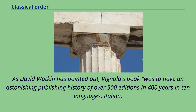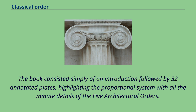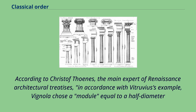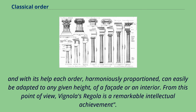A first publication of plates appeared in Rome in 1562, with the title Regola delli Cinque Ordini d'Architettura. As David Watkin has pointed out, Vignola's book had an astonishing publishing history of over 500 editions in 400 years in 10 languages — Italian, Dutch, English, Flemish, French, German, Portuguese, Russian, Spanish, and Swedish — making it perhaps the most influential book of all time. The book consisted of an introduction followed by 32 annotated plates highlighting the proportional system of the five architectural orders. Vignola chose a module equal to a half diameter as the base of the system; all other measurements are expressed in fractions or multiples of this module, creating an arithmetical model by which each order can be adapted to any given height of a facade or interior.